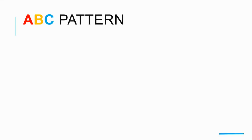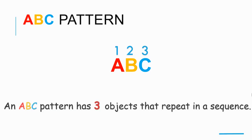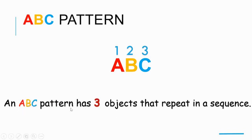Right now we're going to be looking at ABC patterns. An ABC pattern is different from an A-B pattern because it has three different objects — first A, second B, third C. So an ABC pattern has three objects that repeat in a sequence.